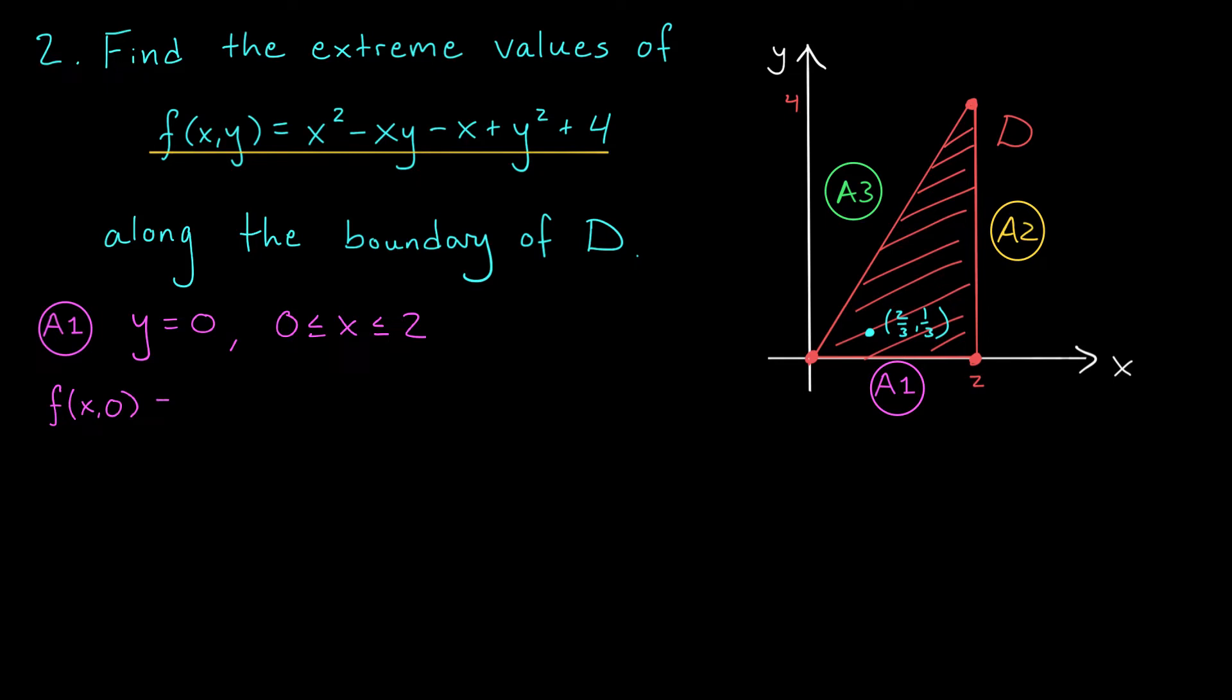We get the equation f(x,0) equals x squared minus x plus 4. We need to determine where this function attains its global max and min for x between 0 and 2. Well, how do we do that? This quadratic looks kind of complicated, so I might not be able to just look at its graph like I did in the last video to find its global max and min.